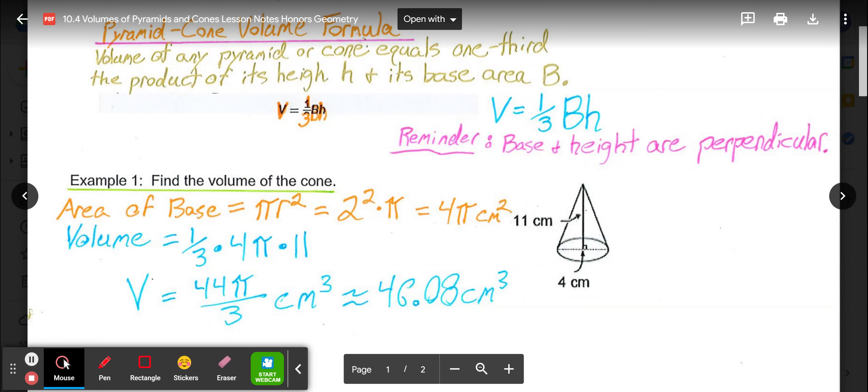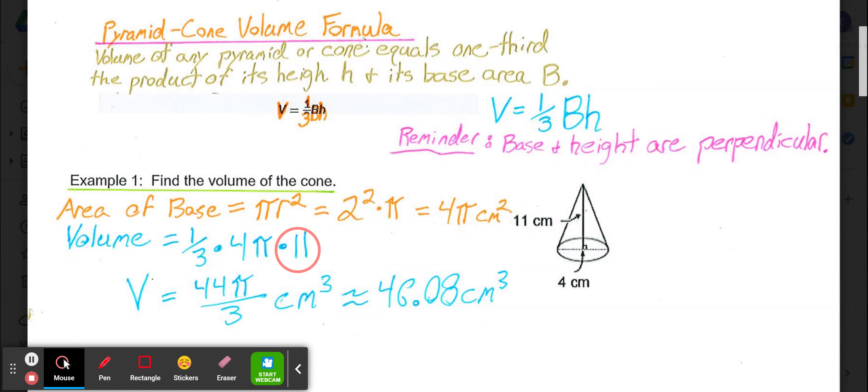Going to our volume formula, one-third area of the base 4π multiplied by the height of the cone 11. So 11 times 4π is 44π, multiplied by one-third would give us 44π over 3. We could leave it as 44π over 3 centimeters cubed for our exact answer, or we could put that into a calculator and get our approximate answer of 46.08 centimeters cubed.